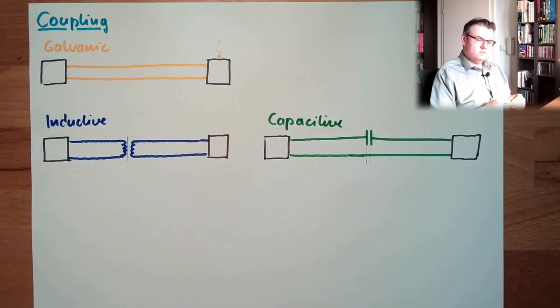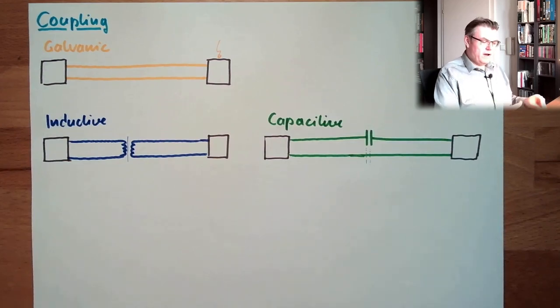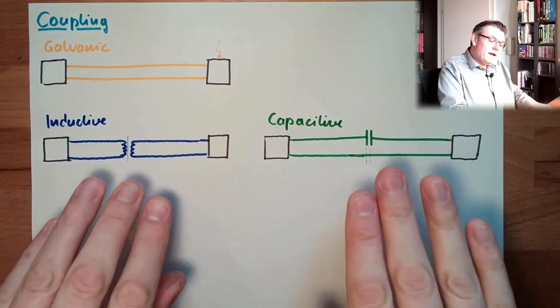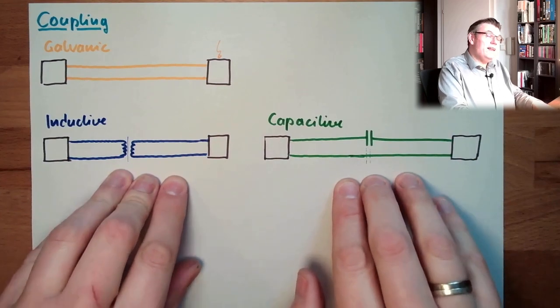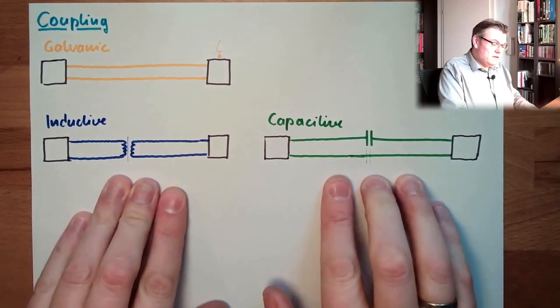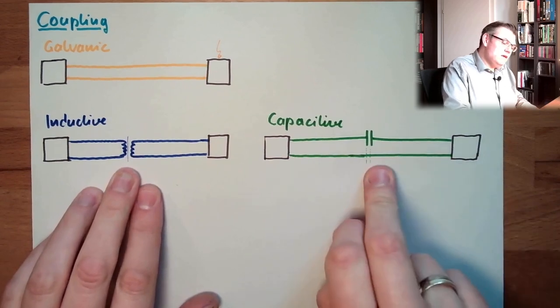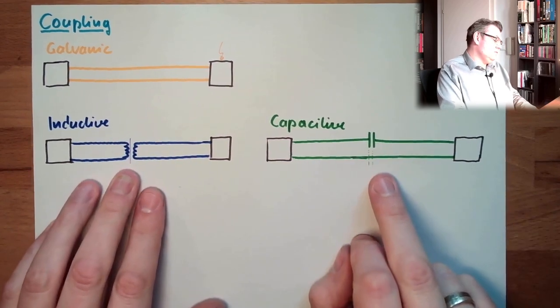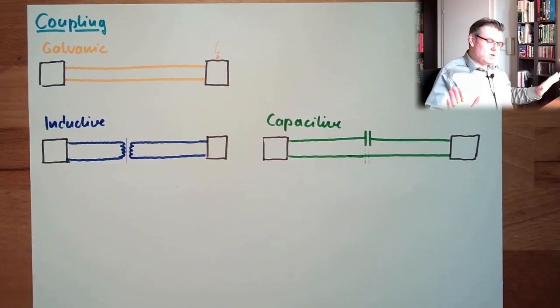Capacitive coupling. Here we are galvanically isolated, insulated. Here via magnetic field, here via electric field. Isolated.